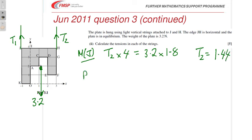Resolving vertically T1 plus T2 equals 3.2. So, T1 equals 1.76. Right, five marks for that part. That's quite generous. On we go with the next bit which is a three-dimensional bit.